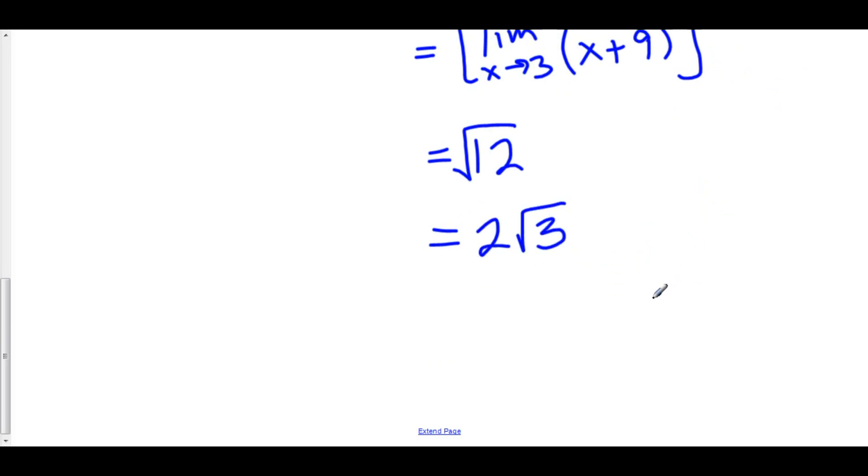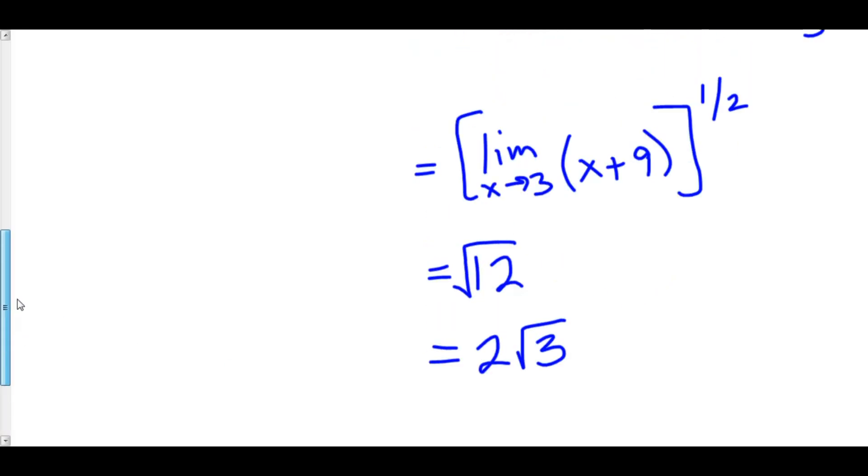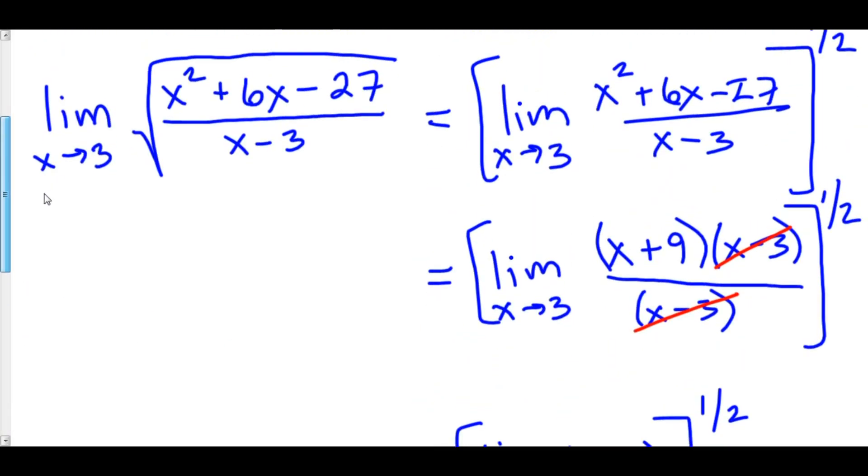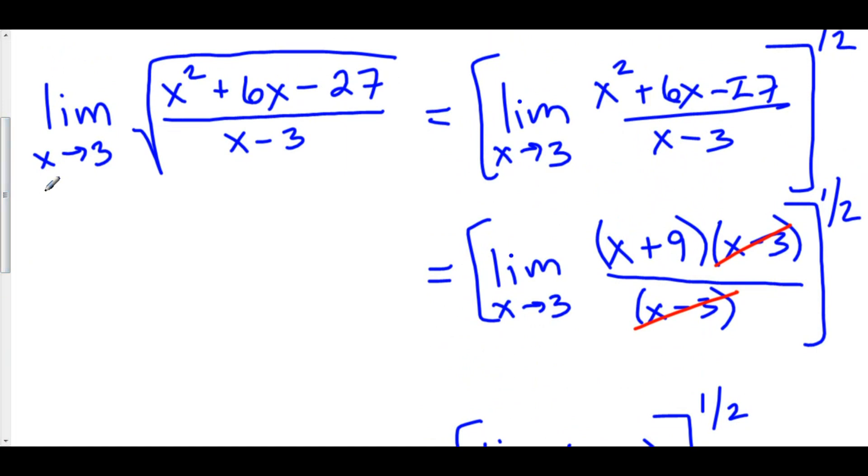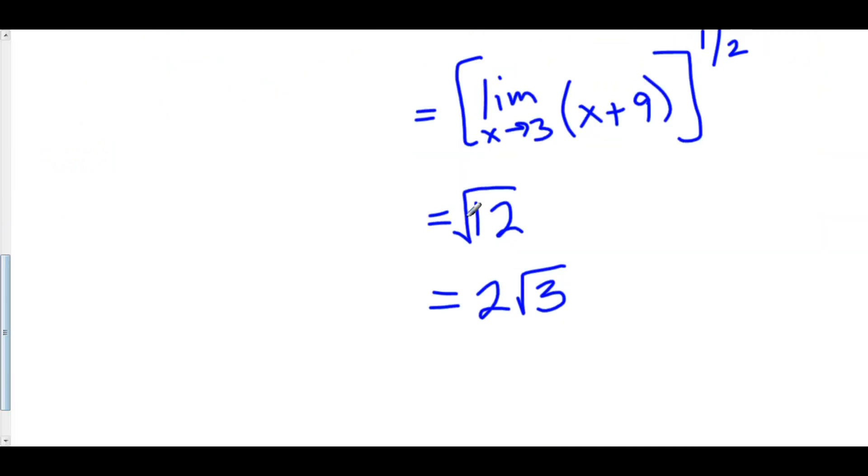So we can use this last property of limits to simplify all of the stuff that we have learned up until now. Namely, that we can raise the entire limit itself to the one half power and then use our three steps to analyze the limit and then bring that power in at the very end. It simplifies matters a lot. Thank you.